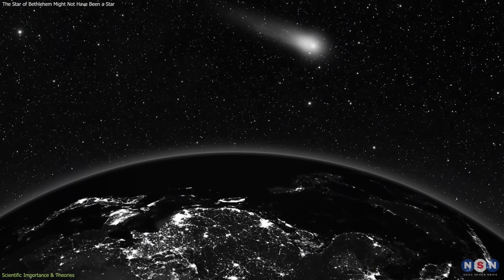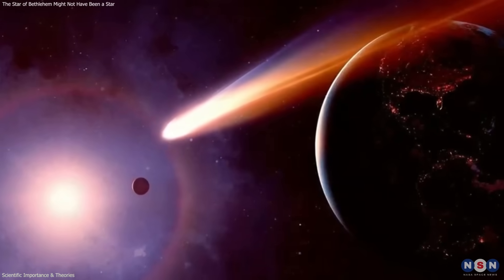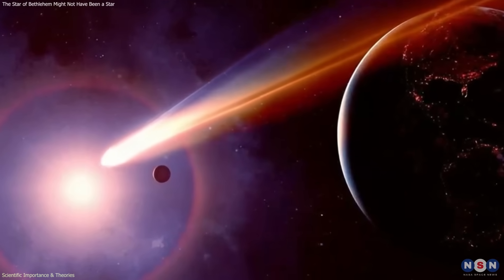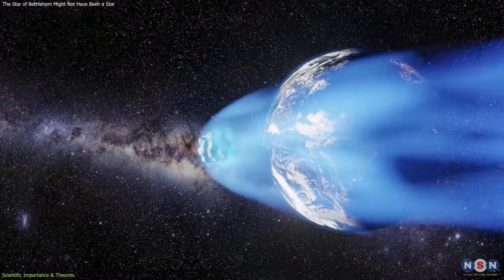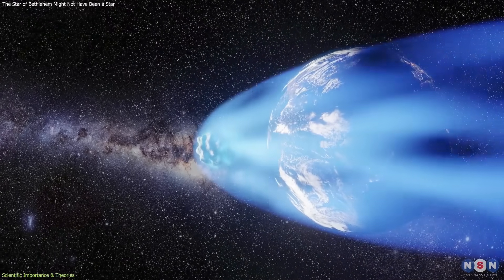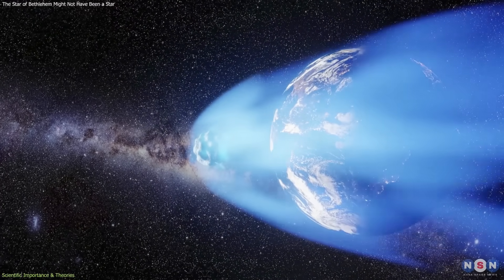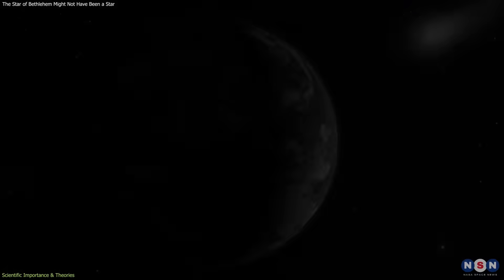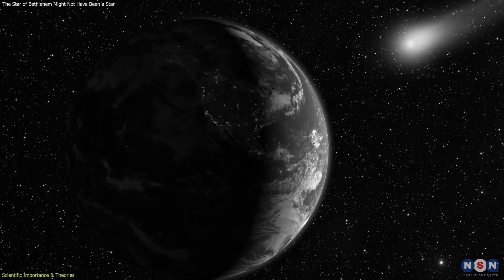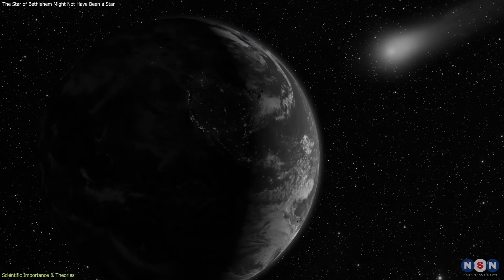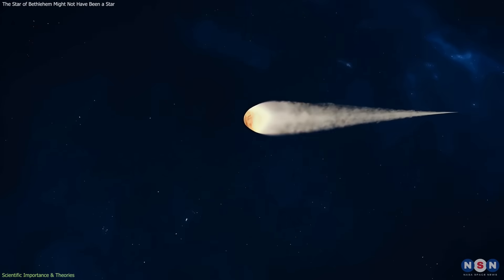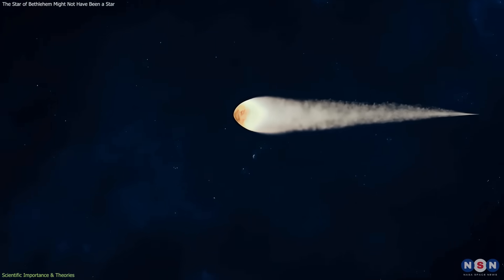Probability is another challenge. A comet passing within lunar distance of Earth is extremely rare. Critics argue that relying on such a scenario risks tailoring the model too closely to the narrative. However, rarity does not mean impossibility.